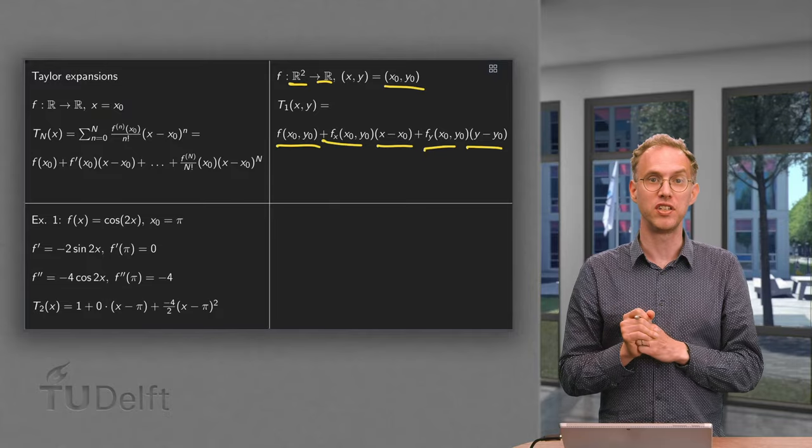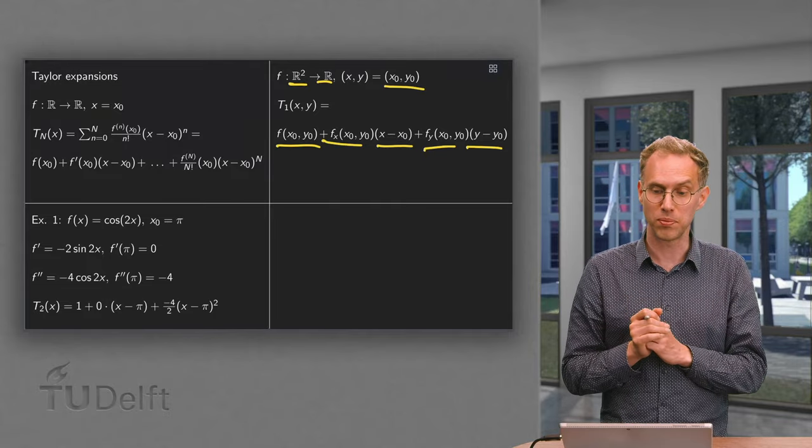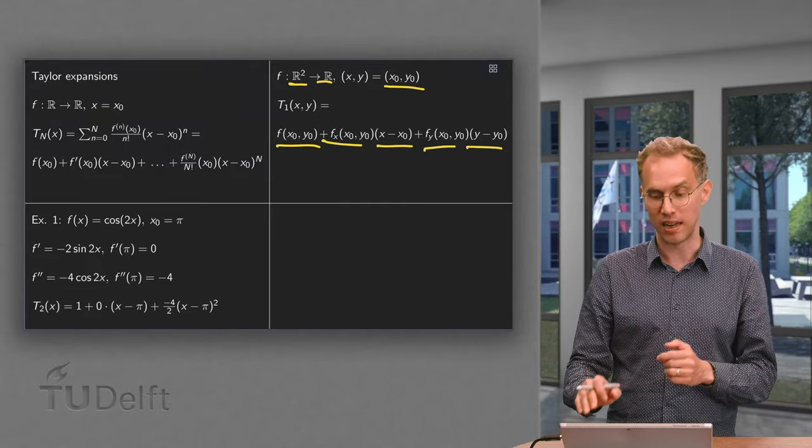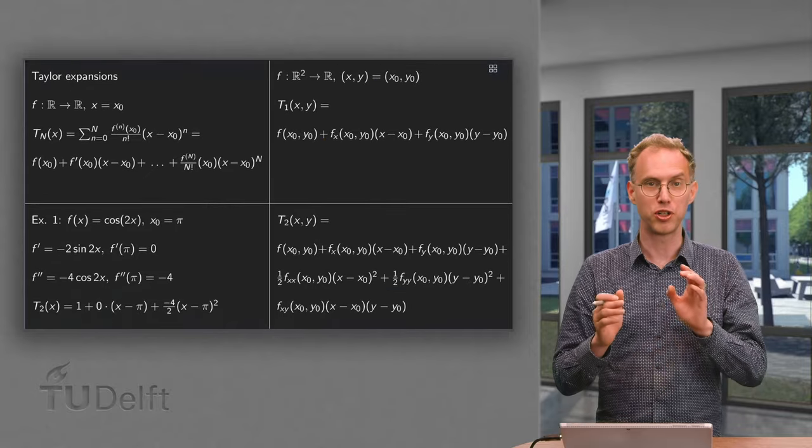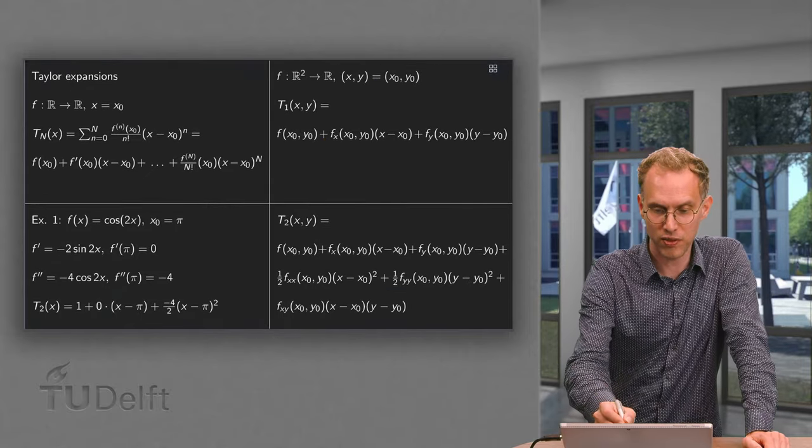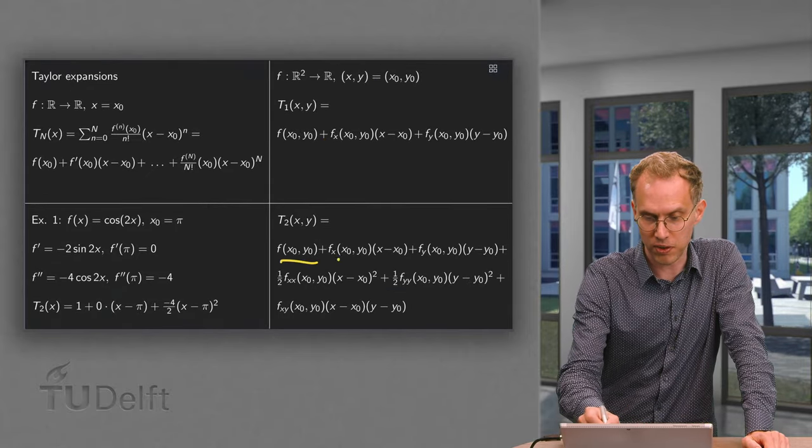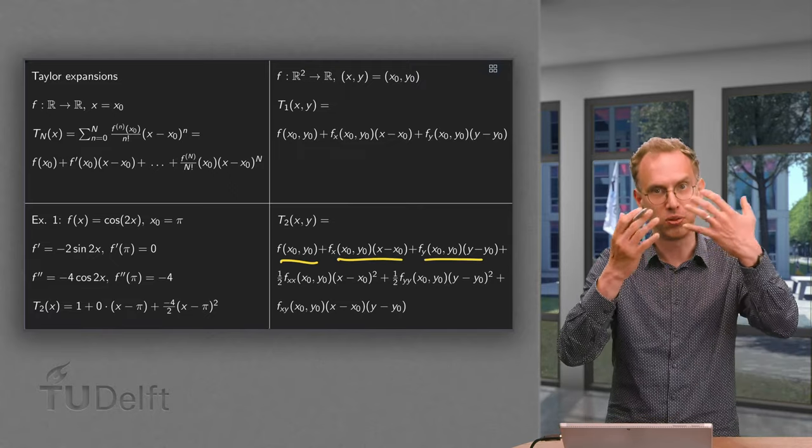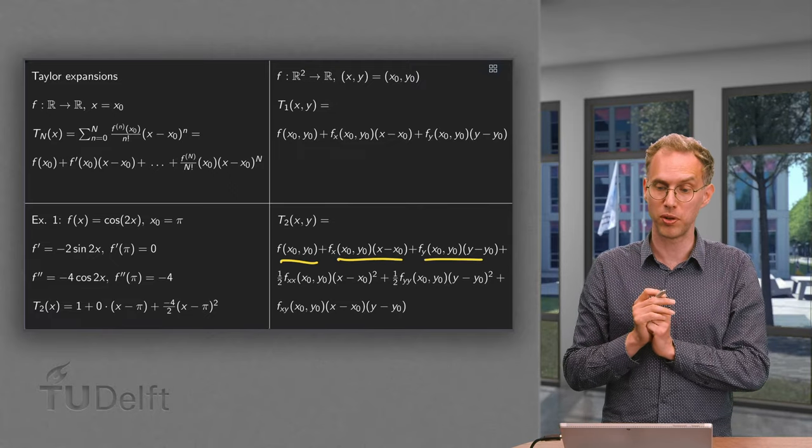And if you make a graph of this, this will correspond to the tangent plane to your function. Now the second one, and there we stop because this one already becomes a big mess. The second one is again, the first part is the same, just as you know from single variable Taylor polynomials.